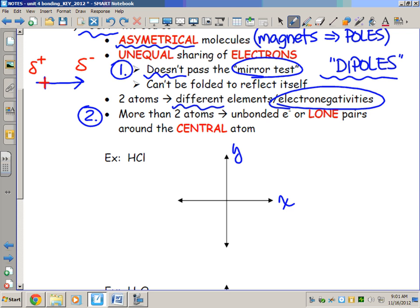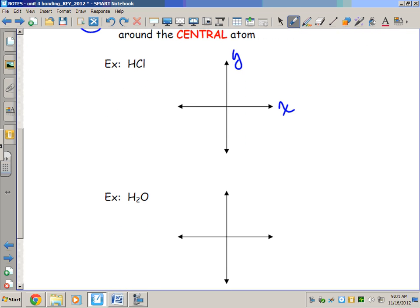The second way is even if it seems to pass a mirror test, if there are more than two atoms and the central atom has lone pairs, that's also an indication it is polar.